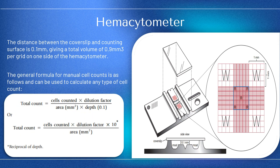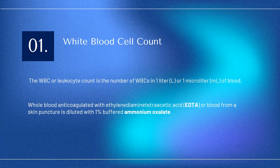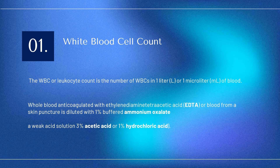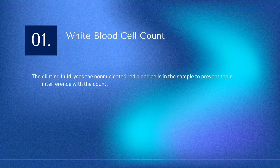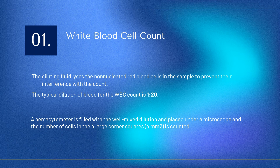The general formula for manual cell counts can be used to calculate any type of cell count. The WBC or leukocyte count is the number of WBCs in one liter or one microliter of blood. Whole blood anticoagulated with EDTA or blood from a skin puncture is diluted with 1% buffered ammonium oxalate or a weak acid solution such as 3% acetic acid or 1% hydrochloric acid. The diluting fluid lyses the non-nucleated red blood cells to prevent interference. The typical dilution for the WBC count is 1 to 20, and cells in the four large corner squares of the hemocytometer are counted.